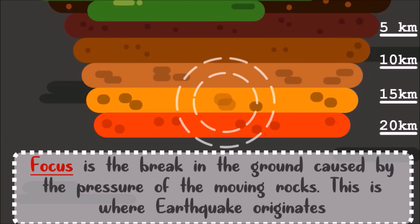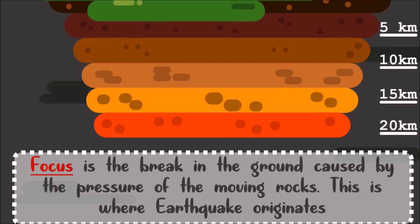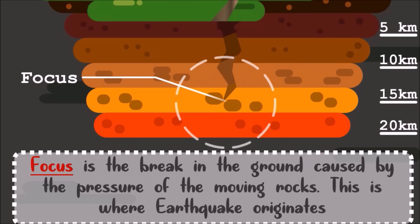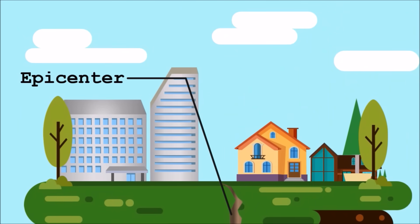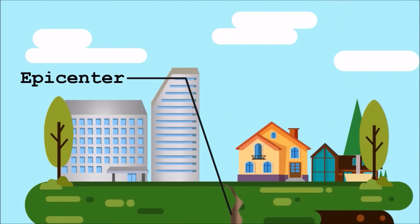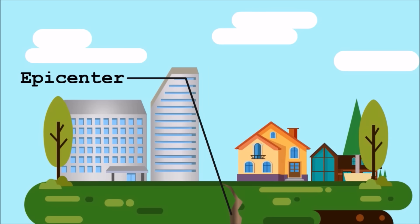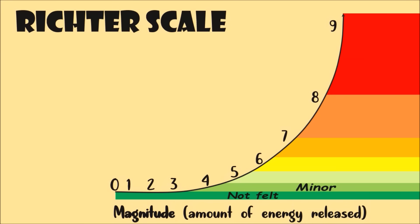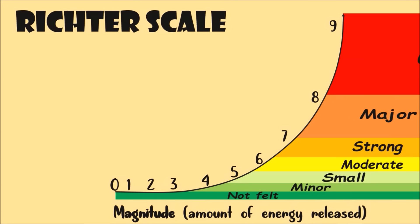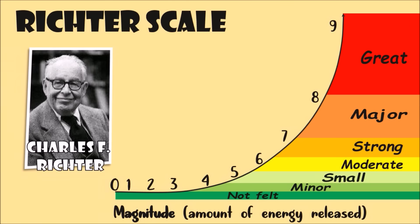The focus is the break in the ground caused by the pressure of moving rocks — it is the place where the earthquake originates. The ground above the focus is called the epicenter. In measuring an earthquake's magnitude, we use the Richter scale. It was developed by Charles F. Richter, an American seismologist, or a person who studies earthquakes.